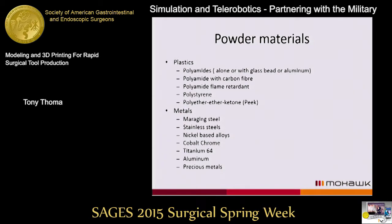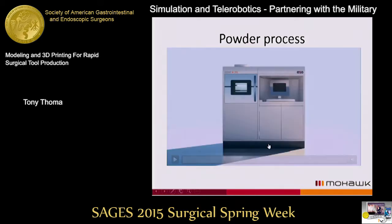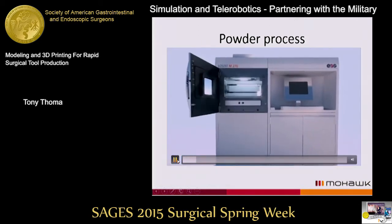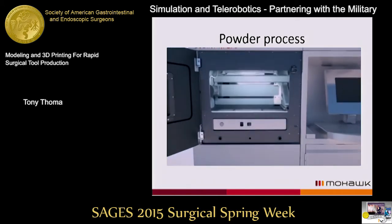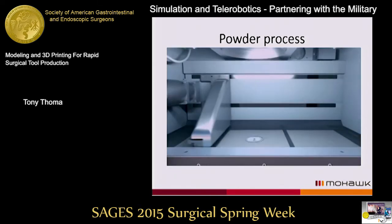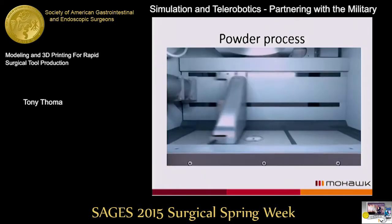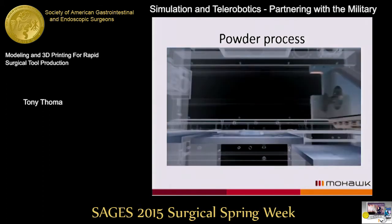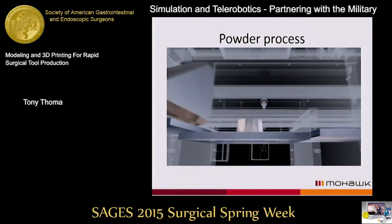In the laser process, a layer of powder is distributed onto a bed, the laser comes in and in two dimensions fuses the material together, the table indexes down, and another layer of material goes on top — in roughly 20-micron increments — to build your part.